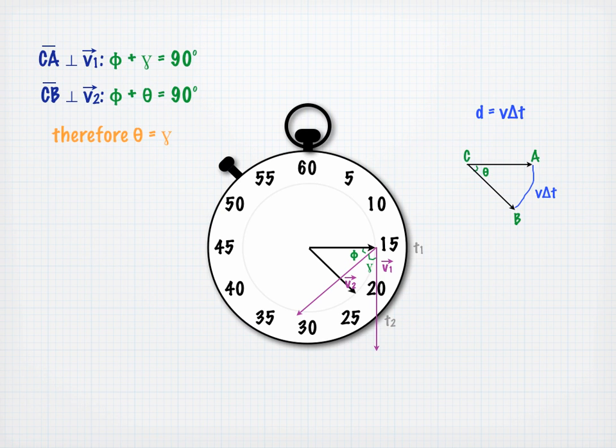When we calculate the instantaneous acceleration of the end of the second hand, we are doing so at one instant in time, meaning that the elapsed time over which we are calculating it is approaching zero. As delta t approaches zero, the points A and B get closer together. The angle theta also approaches zero, and the arc V delta t approaches a straight line.